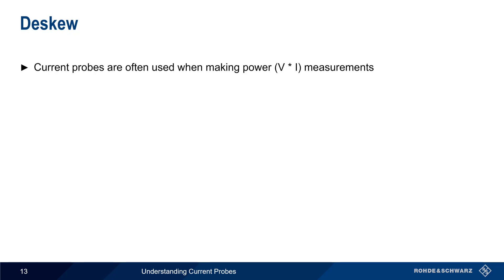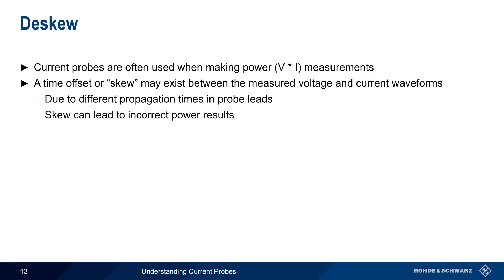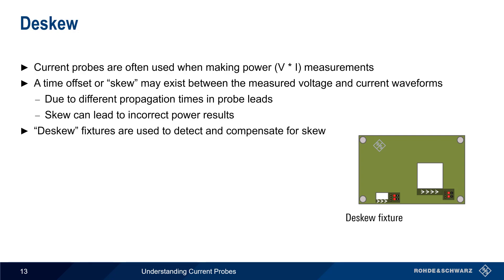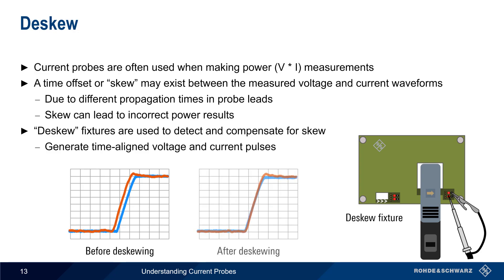The last special topic is deskew. Current probes are often used when making power measurements that involve measuring both voltage and current. In some cases, a time offset or skew may exist between the measured voltage and current waveforms due to different propagation times in the probe leads, and this skew can lead to incorrect power results. Special deskew fixtures are used to detect and compensate for skew by generating time-aligned voltage and current pulses, simultaneously measured by attached current and voltage probes. If these test waveforms are skewed, an appropriate deskew value can be entered on the scope to bring the waveforms back into phase and reduce the effects of skew on subsequent measurements.